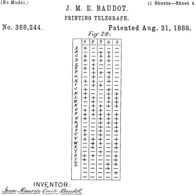Nearly all 20th century teleprinter equipment used Western Union's code, ITA2, or variants thereof. Radio amateurs casually call ITA2 and variants 'Baudot' incorrectly, and even the American Radio Relay League's amateur radio handbook does so, though in more recent editions the tables of codes correctly identifies it as ITA2.